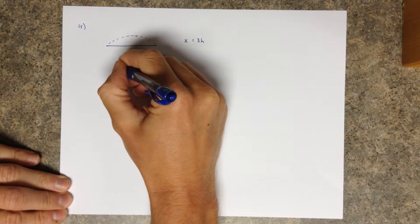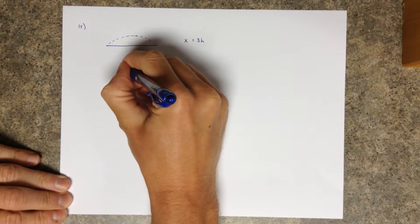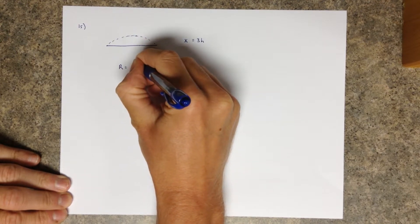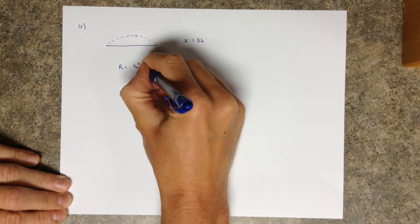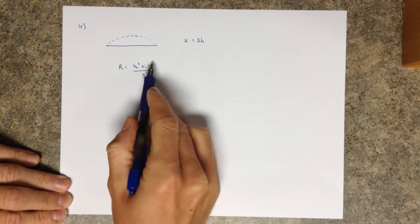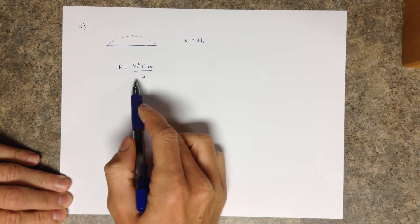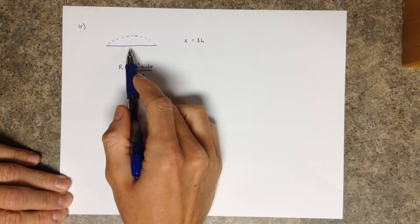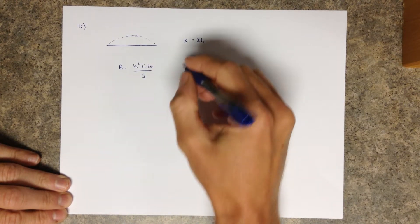And in class we've talked about there's this range equation, and the range equation is v naught squared sine two theta over g. And I can't stress enough that we can only use this equation when we have a symmetrical case, but we do.